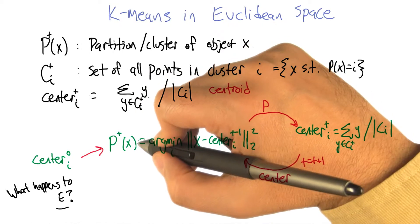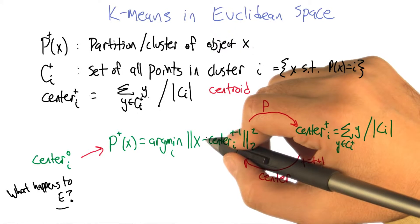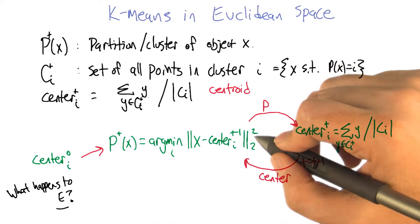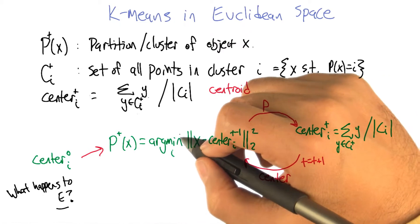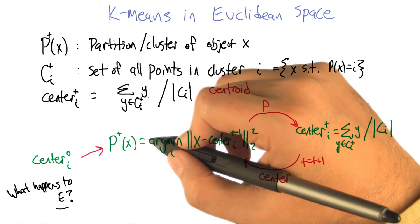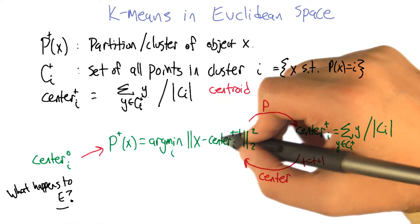The way that this partition is being defined is we, for each point, loop over all the clusters and find the cluster whose center is closest to x in terms of squared distance. What happens to e when we do that? Well, we move a point from one cluster to a different cluster only if it causes the square distance of the center to go down.